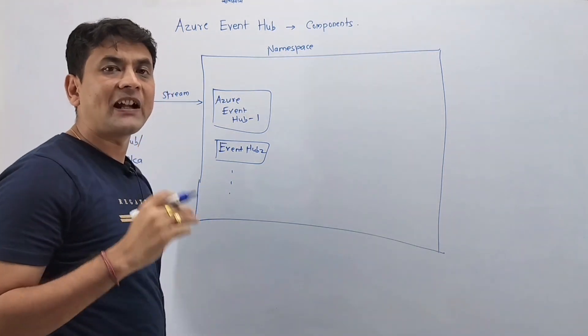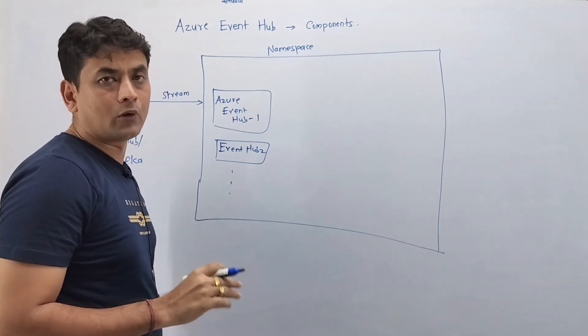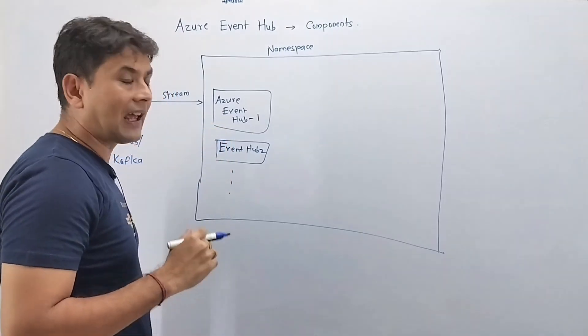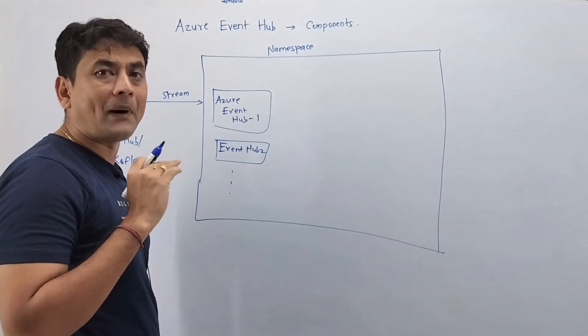Now let's try to understand the internal structure of Event Hub. So internally, Azure Event Hub contains partitions.